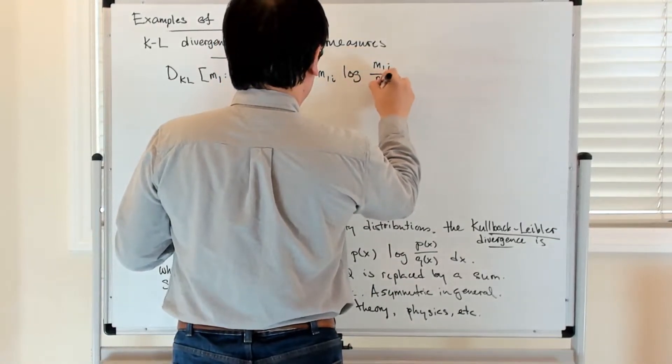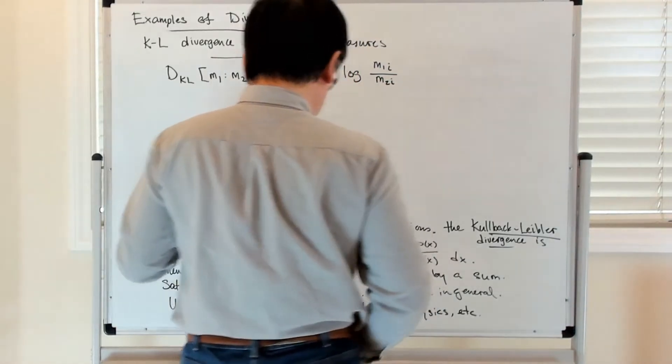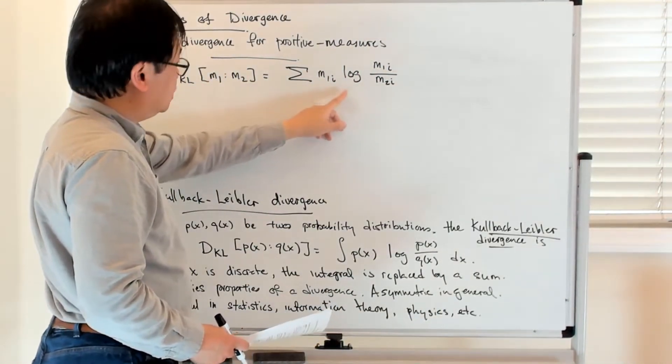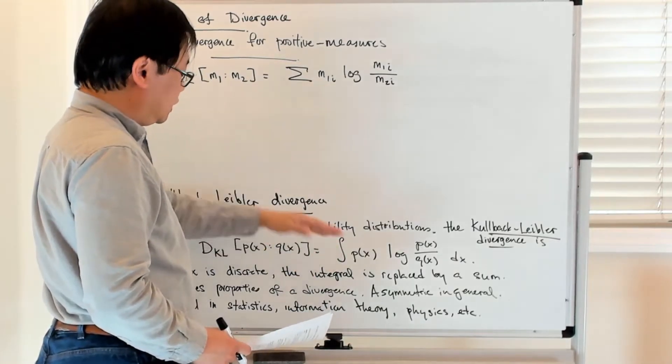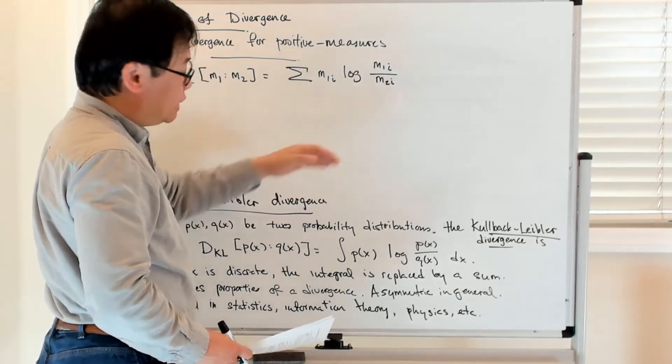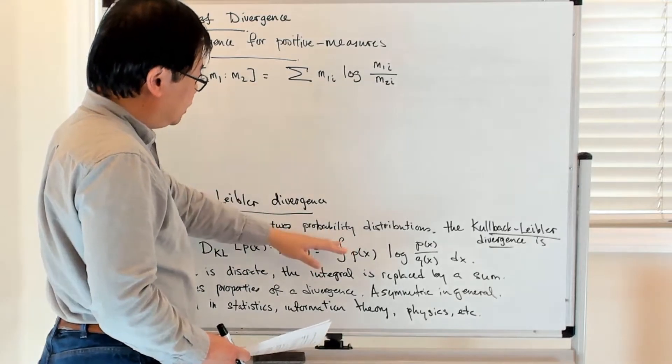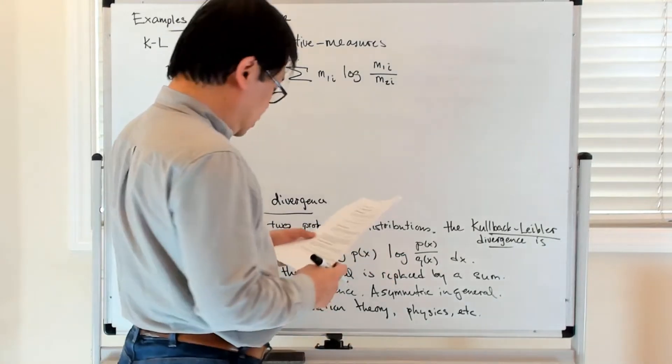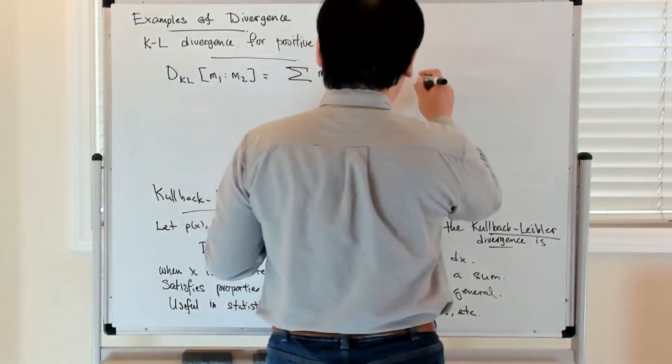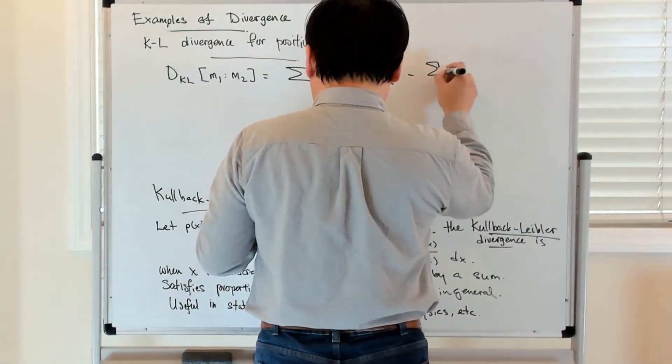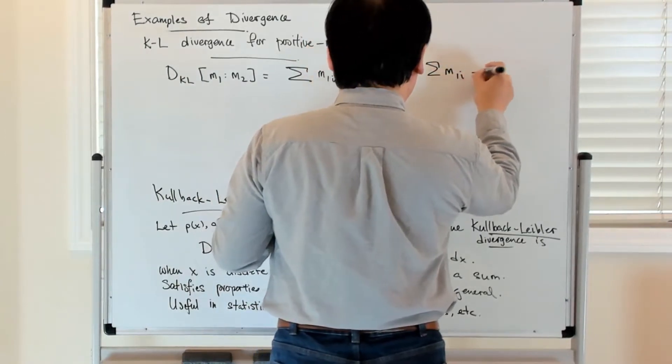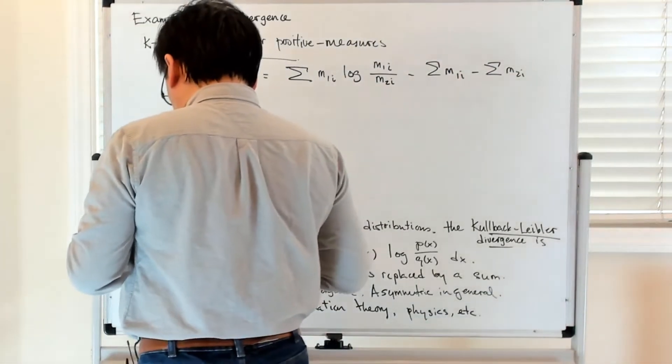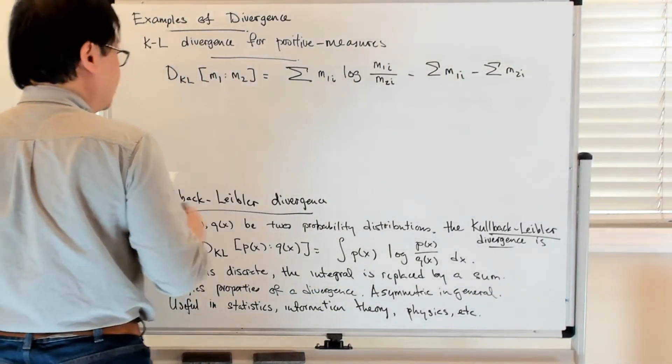log(m1_i / m2_i). So here we're doing discrete measures. The random variable space is now discrete as opposed to continuous, but you'll see that this term is the analog of this term. But then there are two additional terms you have to worry about: minus the sum of m1_i plus the sum of m2_i.